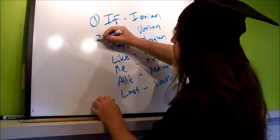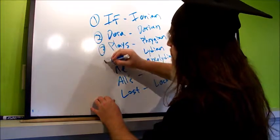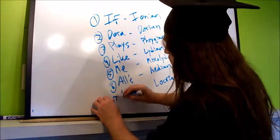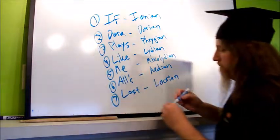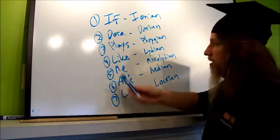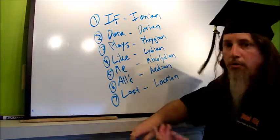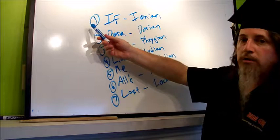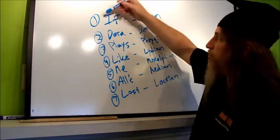So this would be the first mode, this would be the second mode, third mode, fourth mode, fifth mode, sixth mode, and seventh mode. So, very simple, right? The fourth mode is the Lydian mode.